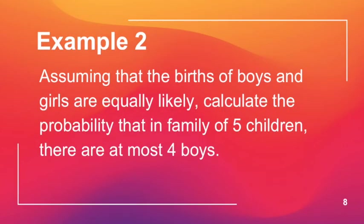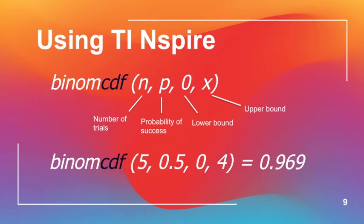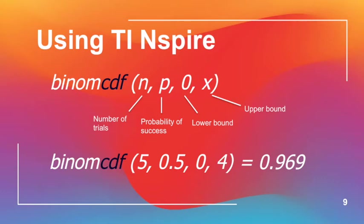Let's use this example: Assuming births of boys and girls are equally likely, calculate the probability that in a family of 5 children there are at most 4 boys — meaning we want P(X ≤ 4). Using binomCDF: N = 5, P = 0.5, the lower bound is 0 (since this is a discrete random variable), and the upper bound X = 4. The answer is 0.969.